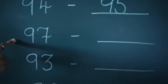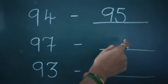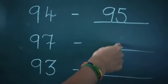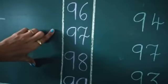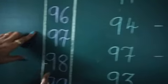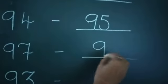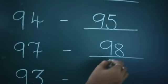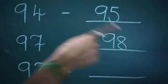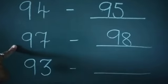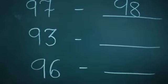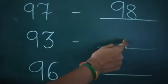Next, number ninety-seven. Which number comes after number ninety-seven? Number ninety-eight comes after number 97.